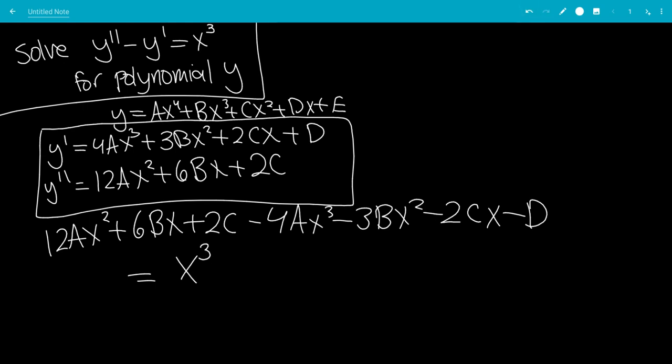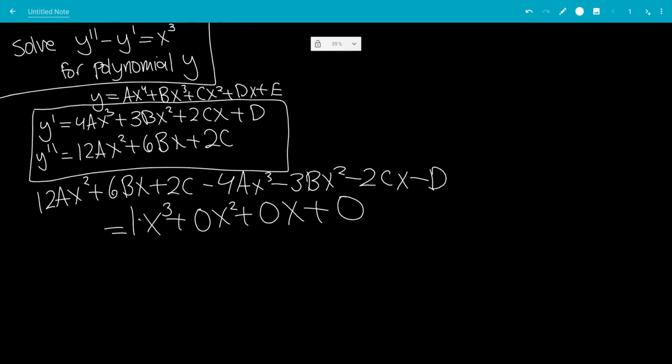So x cubed is multiplied by 1, and then we have 0x squared plus 0x plus 0.